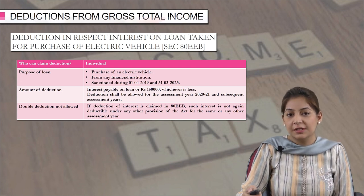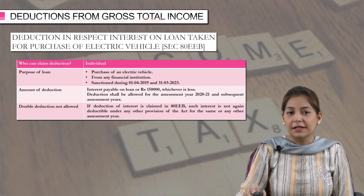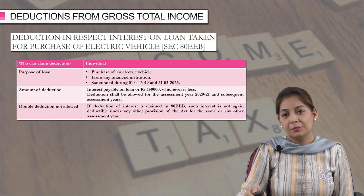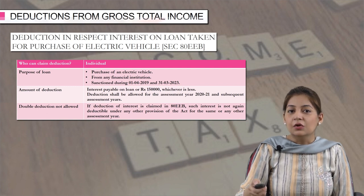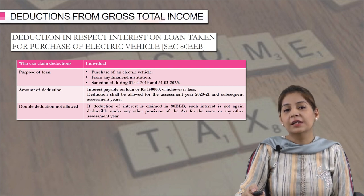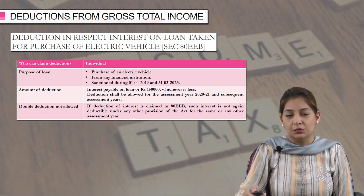The deduction shall be allowed for assessment year 2021 and subsequent assessment years. Again, the same rule applies — if you have claimed the deduction for this interest under any other provision of the act, you cannot claim the deduction under section 80EEB. So to summarize, for 80EEB you must have purchased an electric vehicle and taken a loan for the same. You can claim the deduction of either the amount of interest or rupees 1 lakh 50,000, whichever is lower, from assessment year 2021 onwards.